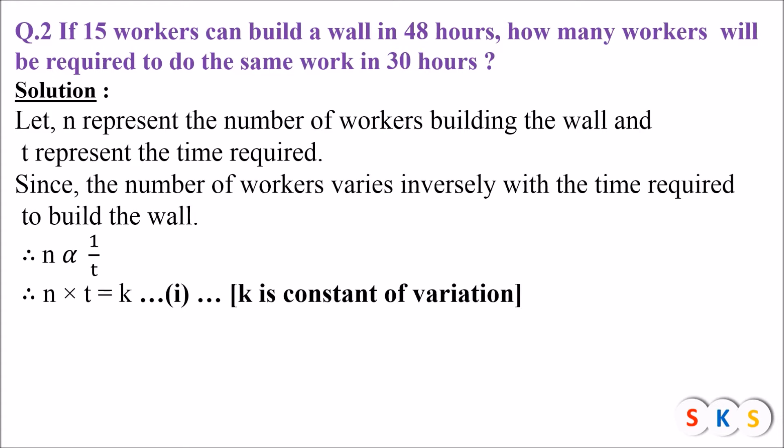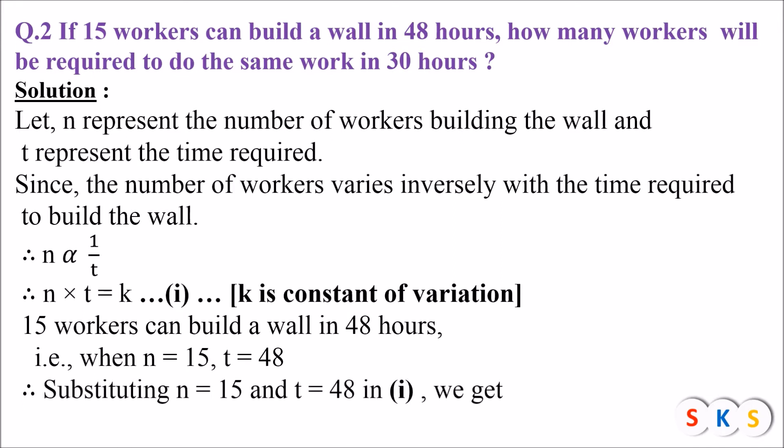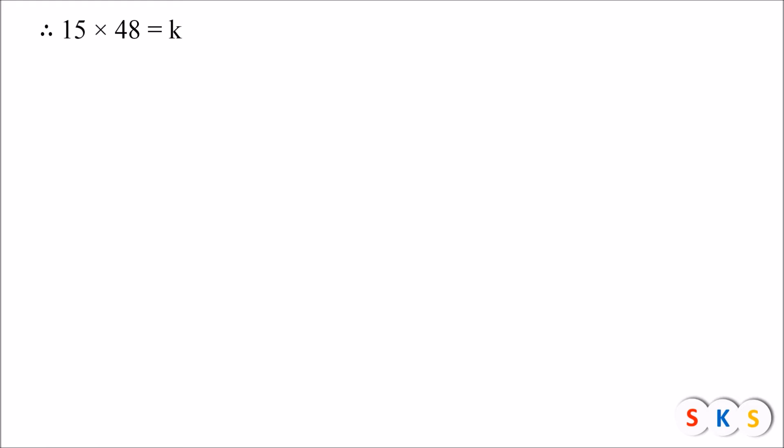We know the number of workers is 15 and the time taken is 48 hours. So when n = 15 and t = 48, we substitute this value in equation 1: 15 × 48 = k, so k = 720.